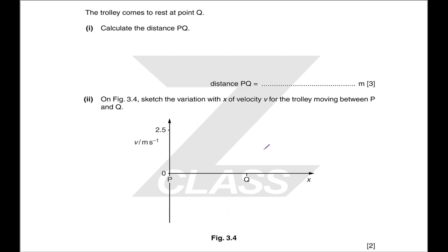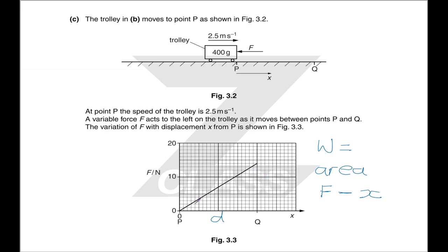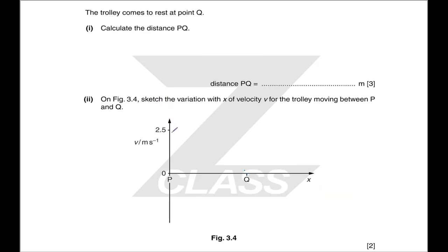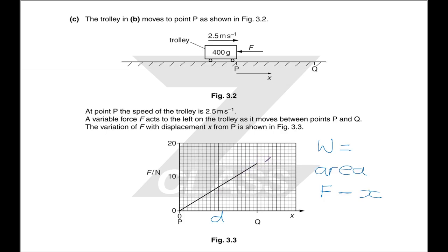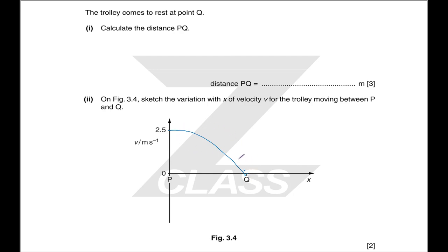On figure 3.4, sketch the variation with x of velocity v for the trolley moving between P and Q. You know it starts at 2.5 m/s and ends at zero. Initially the force is zero, so there is zero acceleration and the curve is flat at the start. It then curves down increasingly steeply because the force — and hence acceleration — is increasing. Force is proportional to acceleration, and acceleration is the gradient of the curve.